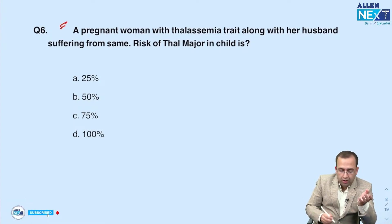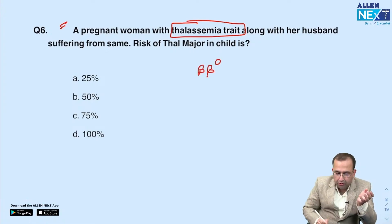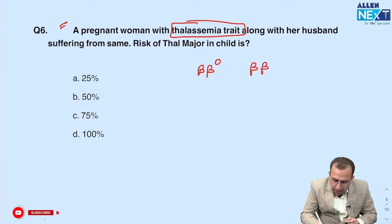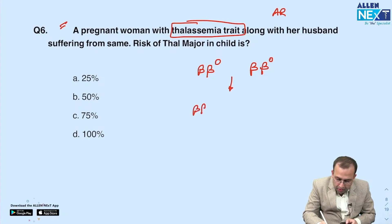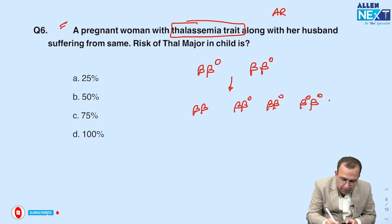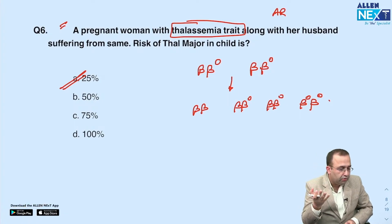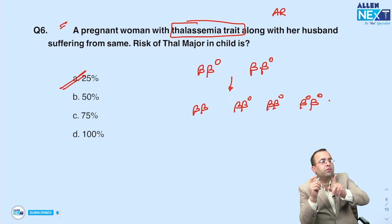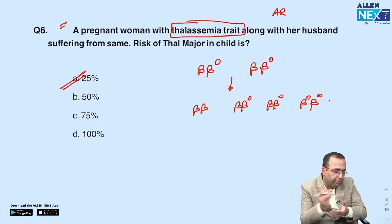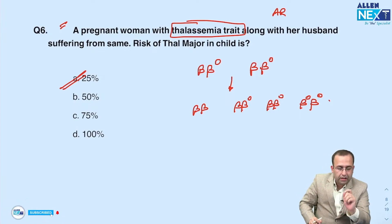A pregnant female who is thalassemia trait — one allele is normal, the other is abnormal — and her husband is also thalassemia trait. In autosomal recessive diseases, both parents are carriers. The four possible genotypes of children: beta/beta, beta/beta-0, beta/beta-0, beta-0/beta-0. The risk of the child being thalassemia major is 25%.